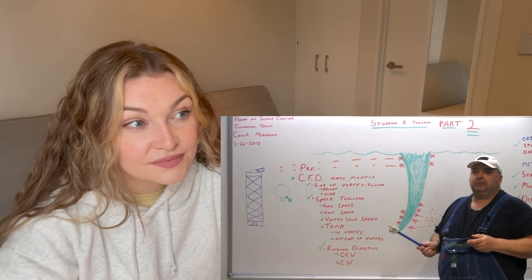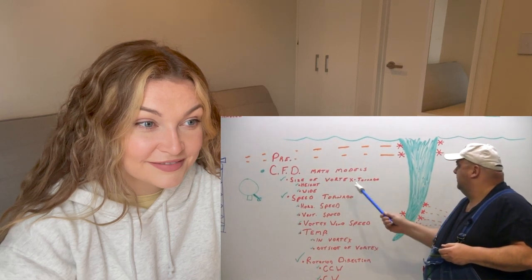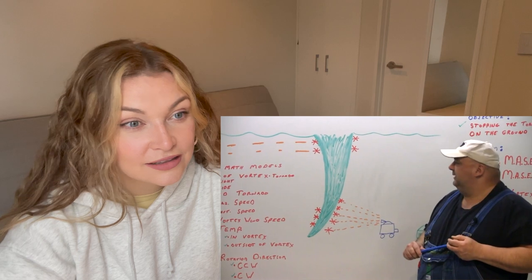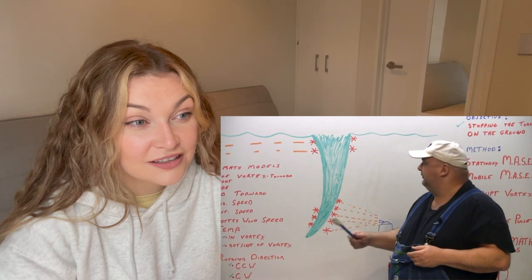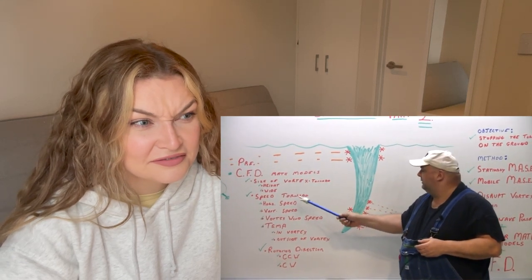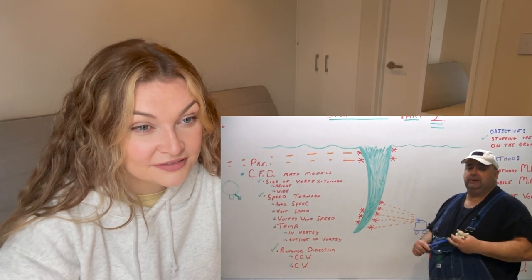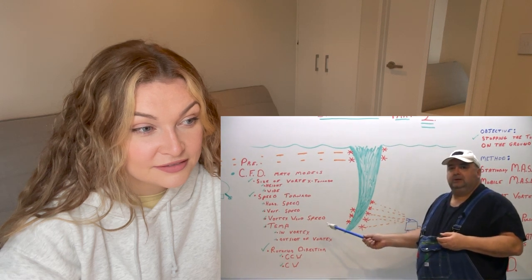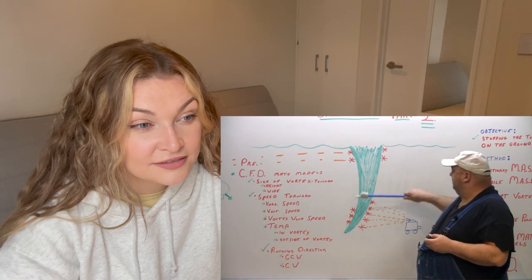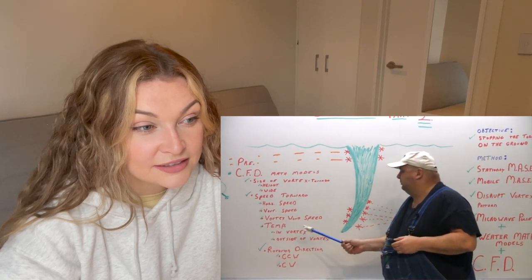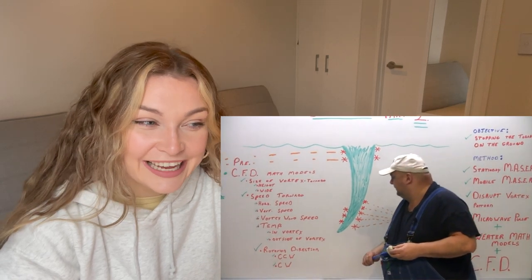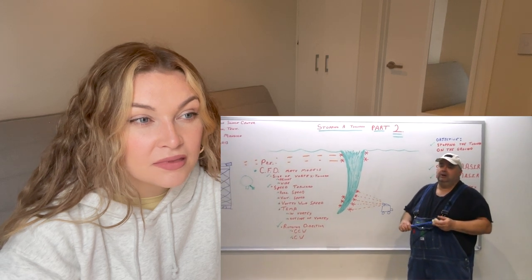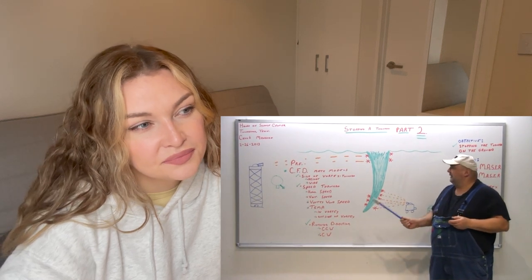The math models are already established — computational fluid dynamics math models. When the vortex touches down, there will be a model already in the computer system that determines the height, the width, the speed of the tornado, the horizontal speed it's traveling on land, the vertical speed as the vortex comes down, the vortex wind speed, different layers and levels of the tornado itself, the temperature inside and outside the vortex, and the rotation direction. This is very important because mostly in North America it goes counter-clockwise, but sometimes it goes clockwise — so we've got to determine that right from the beginning.